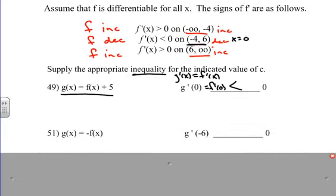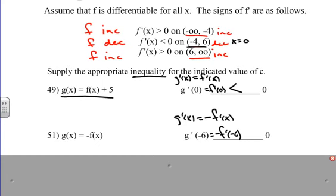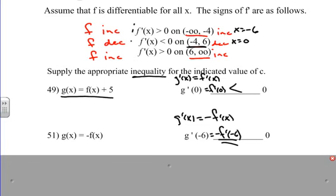If G of x equals negative F of x, then G prime of x equals negative F prime of x — the negative is a constant. So we're finding the opposite of F prime of negative 6. Looking at our intervals, x equals negative 6 falls in the interval where f prime is greater than zero — positive. However, we have that negative out front, so the positive turns into its opposite. Therefore G prime of negative 6 is less than zero.